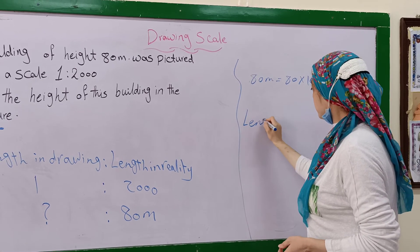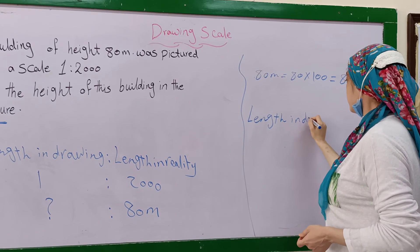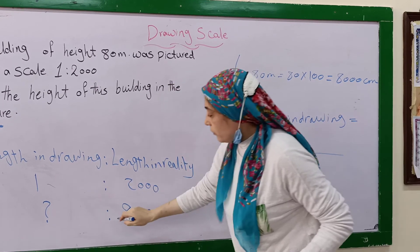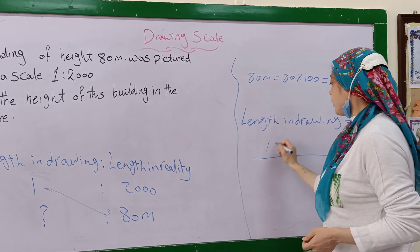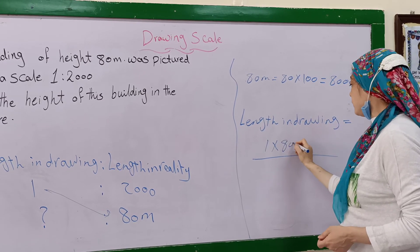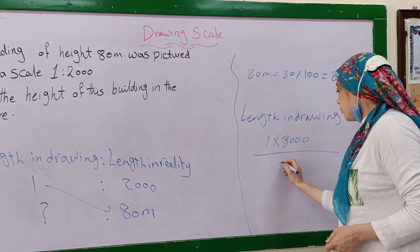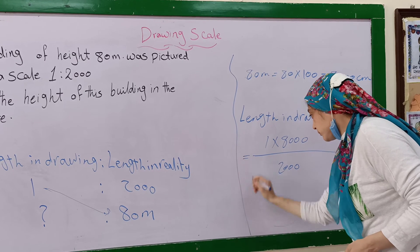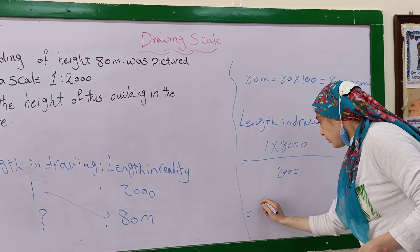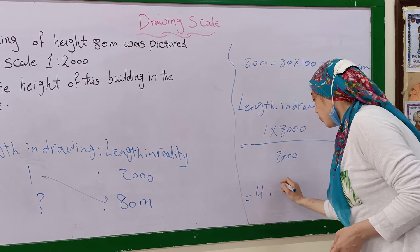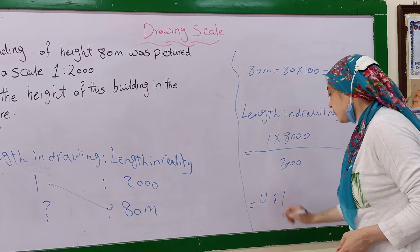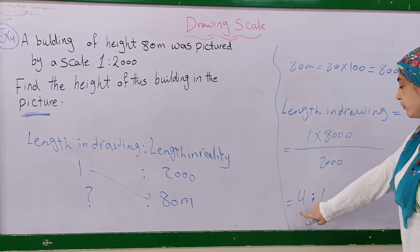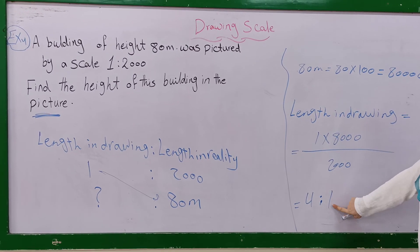The drawing length equals 1 multiplied by 8,000 centimeters divided by 2,000, which equals 4 centimeters. So the height of the building in the picture is 4 centimeters.